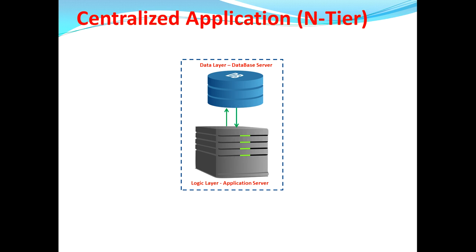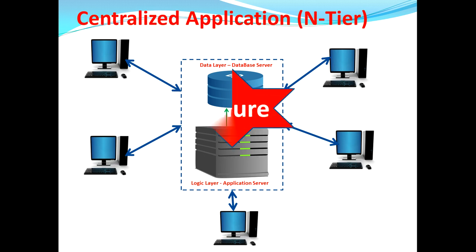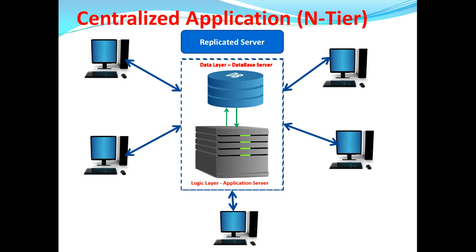In a centralized application, we have an application server on one machine and a database server on another, with client machines trying to utilize features or process transactions. The problem is that if the centralized system goes down, all those client machines will be unable to process anything. To overcome this, we have the concept of a replicated server — the moment your centralized server goes down, the replicated server automatically comes into the picture and all requests get routed to it.